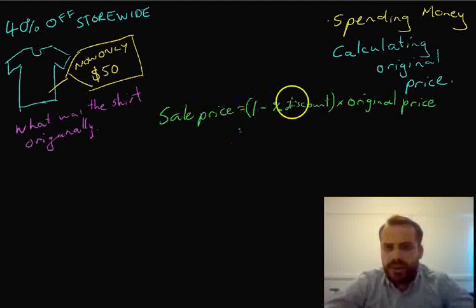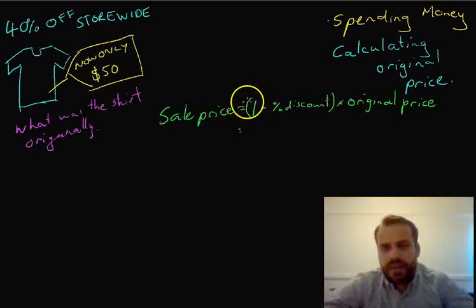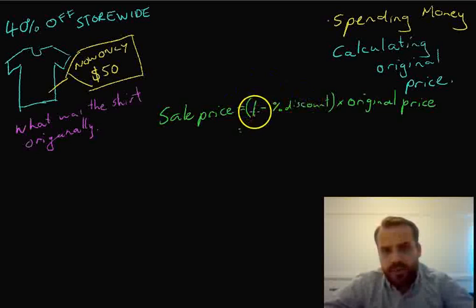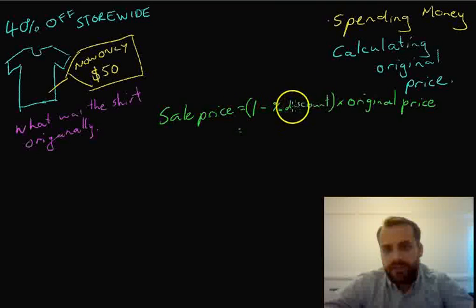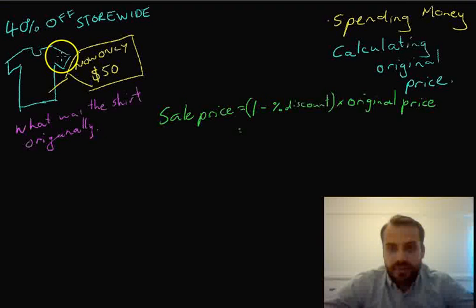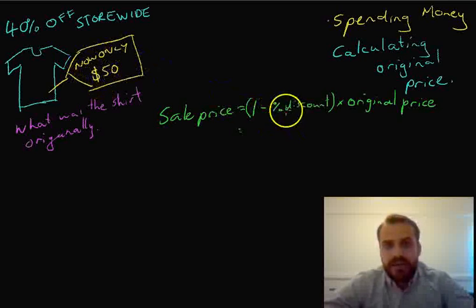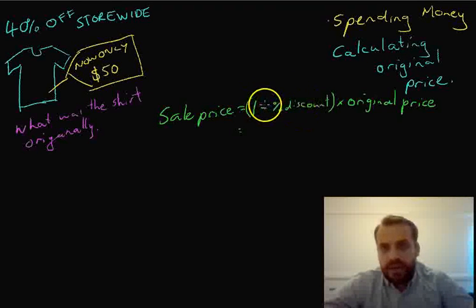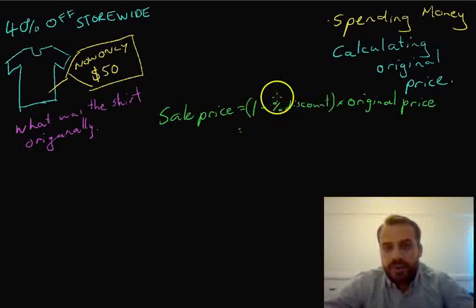Okay, now you're probably looking at that going, why? What does that mean? This 1 minus the percentage discount. This is the same as saying, if you took 40% off something. So if you took 40% off the price of something, 60% would be remaining. So that's this 1 minus. What we're actually doing is 1 minus 40%, which gives us 0.6.